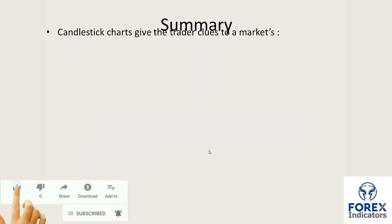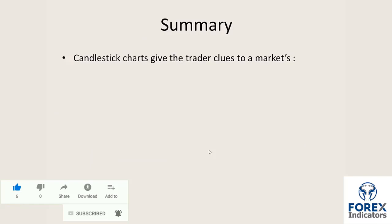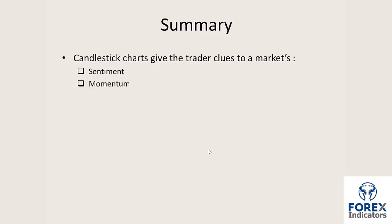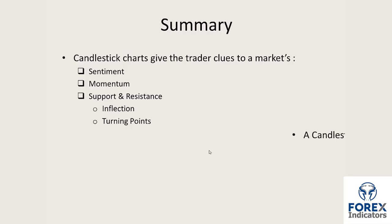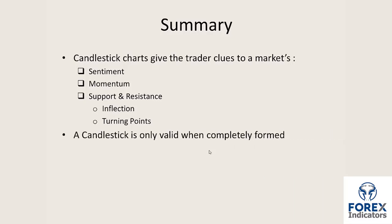In summary, the candlestick chart gives the trader clues to a market's sentiment — i.e. are buyers or sellers driving the market — and momentum, how strongly the market is moving in any particular direction. They also help to confirm support and resistance levels. This can be points of inflection, a point where the market turns, not necessarily at a strong support and resistance level, but maybe the start of a new level or confirming prior points of inflection into new levels of support and resistance. A candlestick is only valid when it's completely formed.